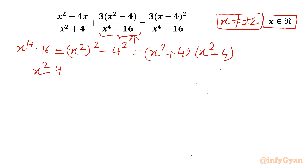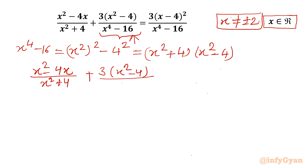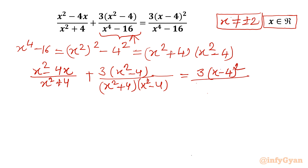So we can write the equation as: (x² - 4x) over (x² + 4), plus 3(x² - 4) divided by (x² + 4)(x² - 4), equals 3(x - 4)² divided by x⁴ - 16. Now we can cancel the (x² - 4) brackets. Our denominators on the LHS are now the same, so we can simply add the numerators.